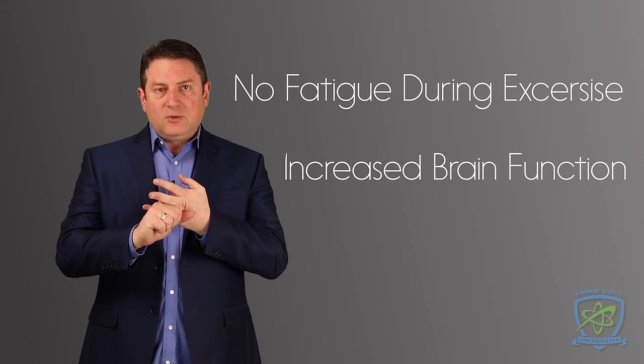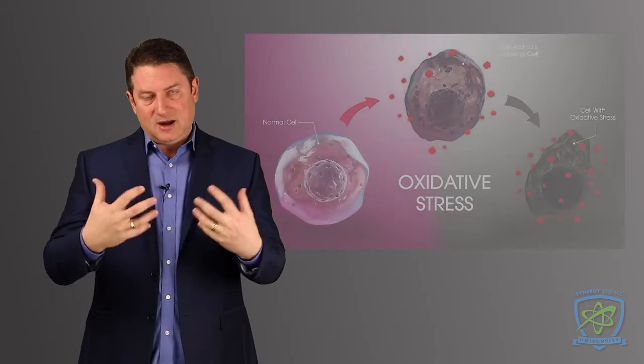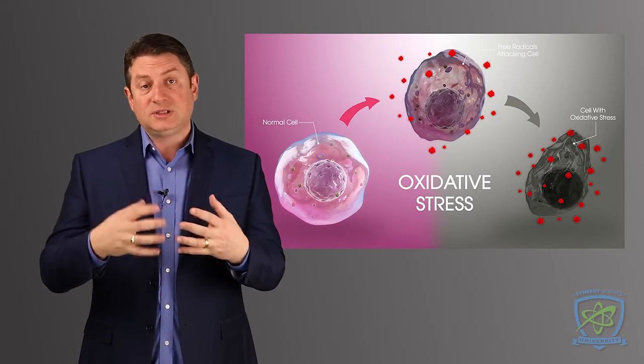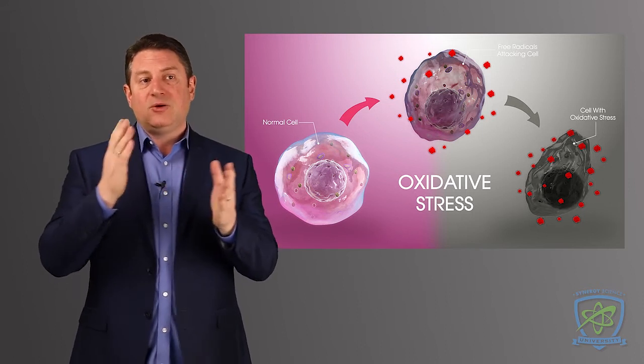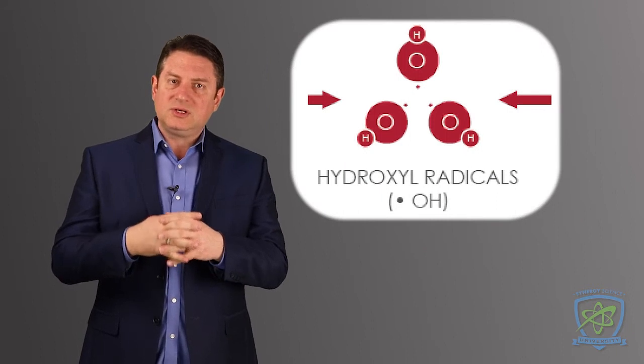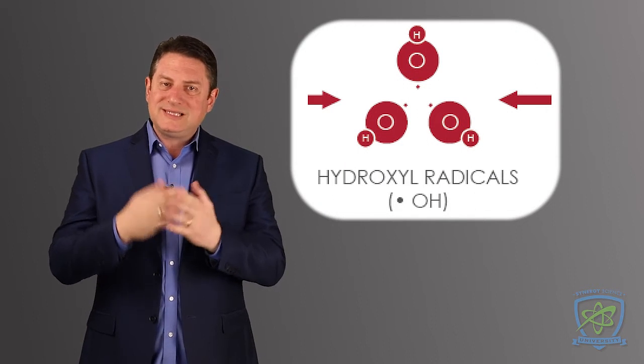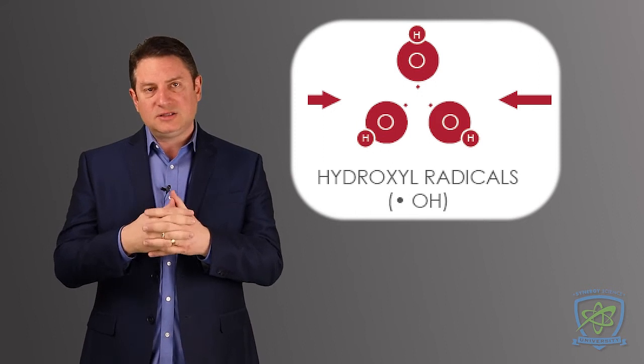Also, we have huge benefits with hydrogen on oxidative stress in the body, which is the most important thing to do. And where does oxidative stress come from? Reactive oxygen species. Hydroxyl radicals are one of the most cytotoxic or cell damaging reactive oxygen species in the body.